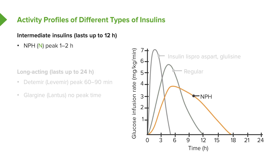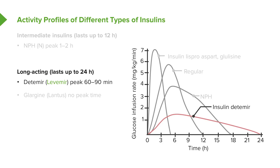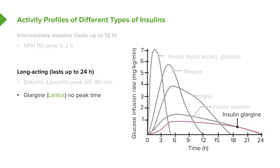The intermediate insulins last generally in the 12-hour range and peak at about 1 to 2 hours — we call them NPH insulins. The long-acting insulins are the newest insulins and are really starting to become a mainstay of insulin therapy. Detemir insulin peaks around 60 to 90 minutes and lasts about 24 hours. Glargine insulin doesn't really have a peak time — there is a bit of a spike at around 3 or 4 hours, but it's not clinically relevant. From a practical point of view, it doesn't really have a peak time, and it also lasts about 24 hours.